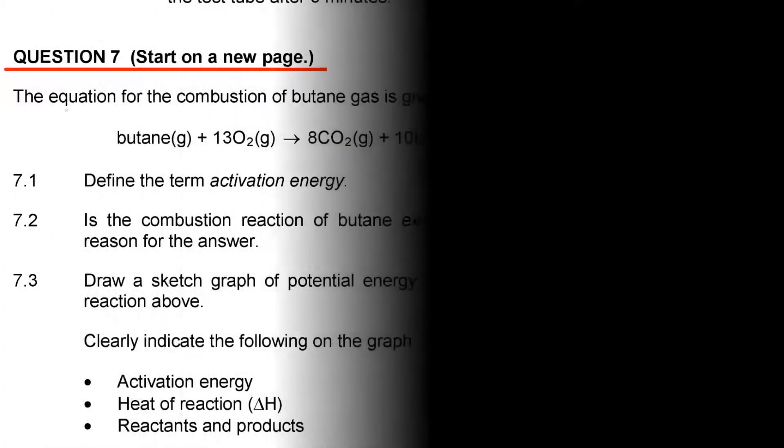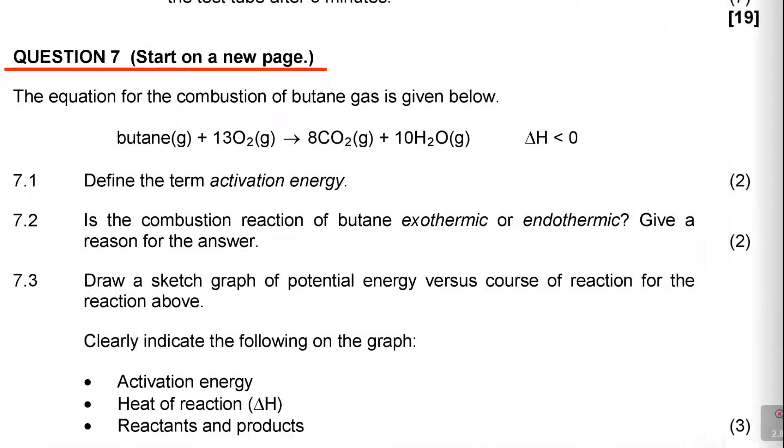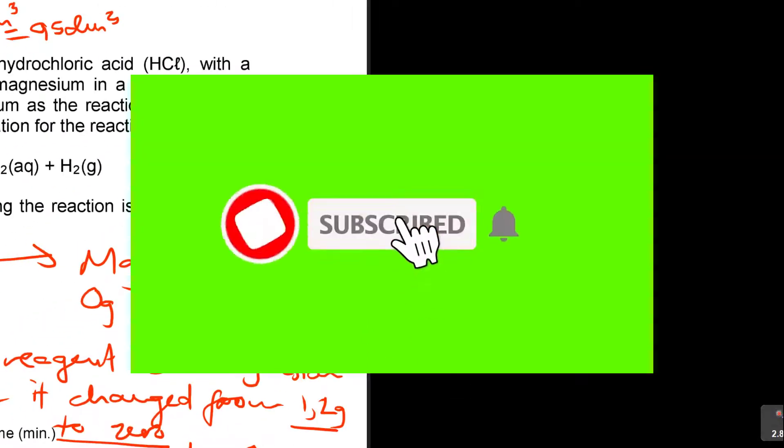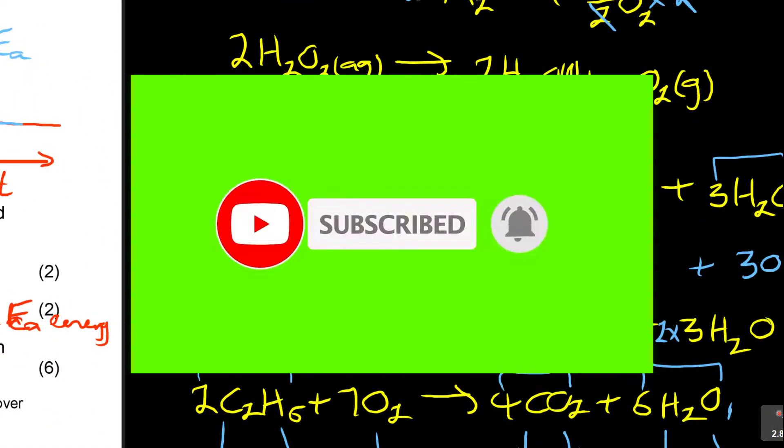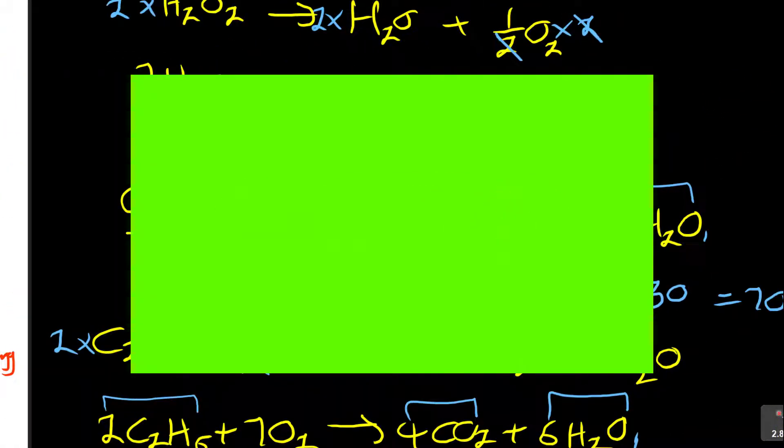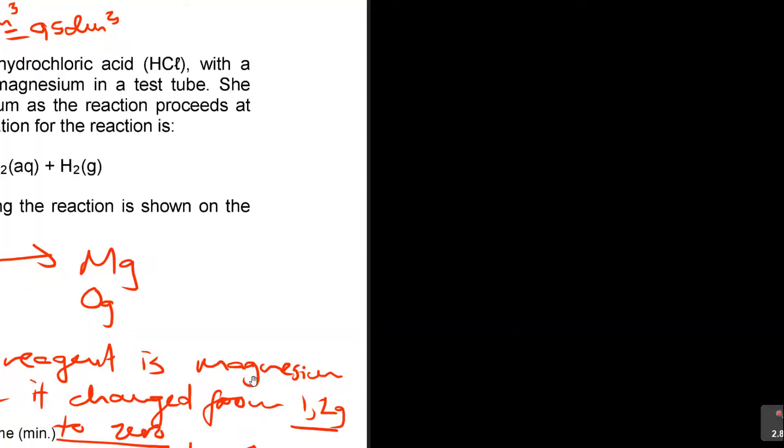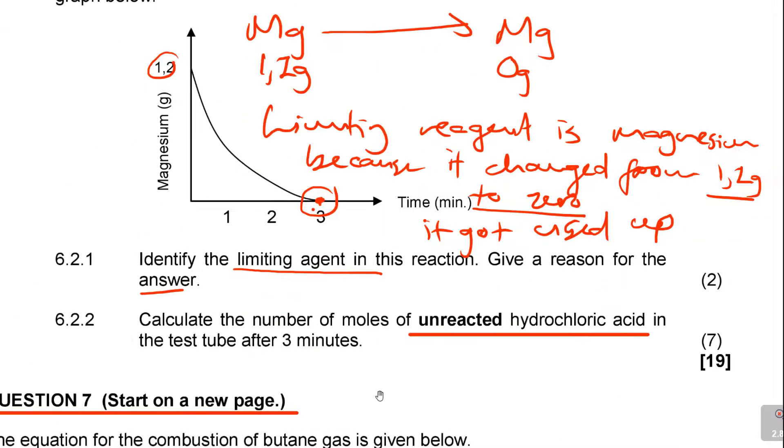Question 7 says the equation for the combustion of butane, combustion is burning, of butane is given below. I think I actually demonstrated this earlier when I was showing C2H6 plus O2, this was actually ethane, but now they are talking about butane here.